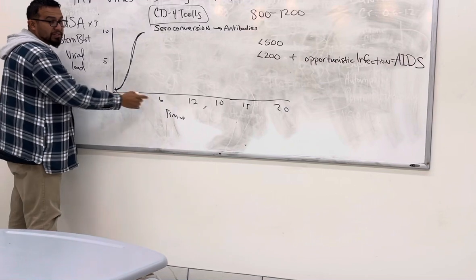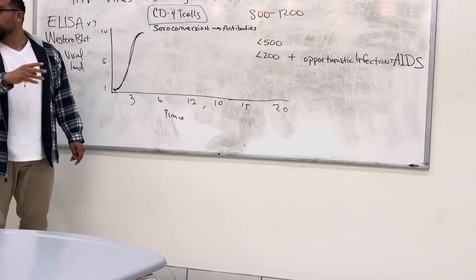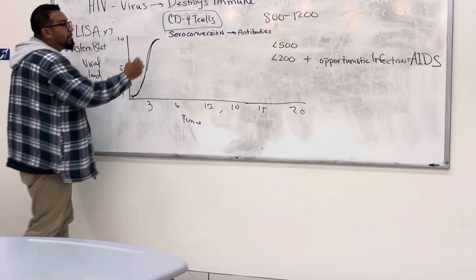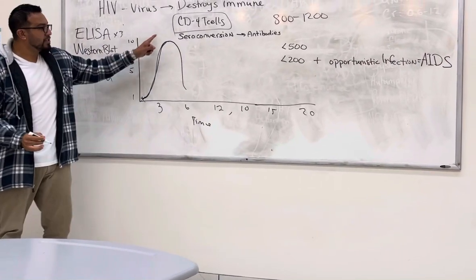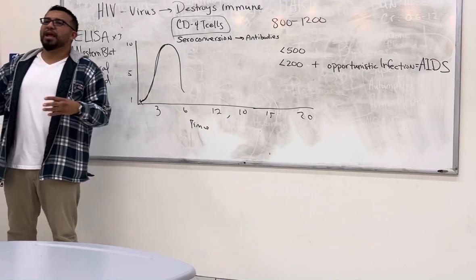It usually happens between three to six months. About 98% of people seroconvert within three to six months, right? But the virus does something very unique. Then the viral load drops. And so during that seroconversion, that's when you have the flu-like symptoms.